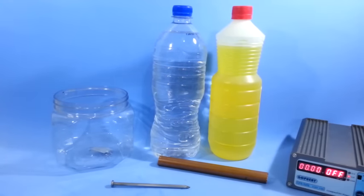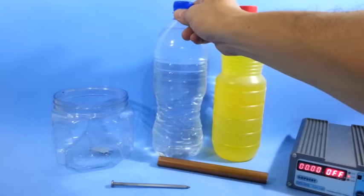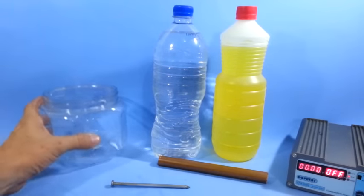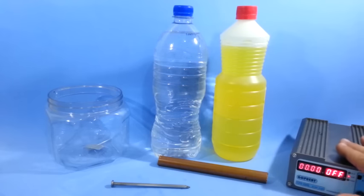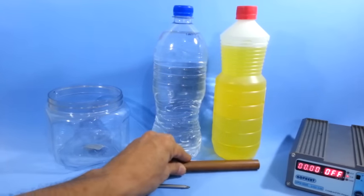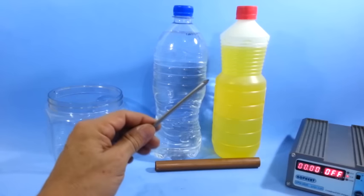The materials we need are muriatic acid, purified water, a glass or plastic jar, a power supply or battery, a piece of copper, and an iron object that we will copper plate.